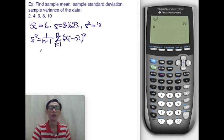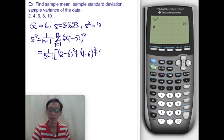Our n is 5, 5 pieces of data. We have 1 over 5 minus 1, sum from x1 is 2, 2 minus 6 squared, plus 4 minus 6 squared, plus 6 minus 6 squared, that's 0, plus 8 minus 6 squared, plus 10 minus 6 squared. And you get the idea.